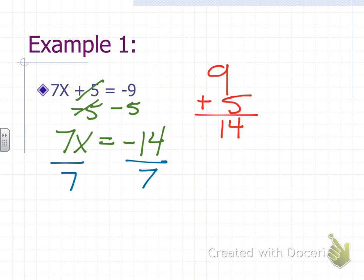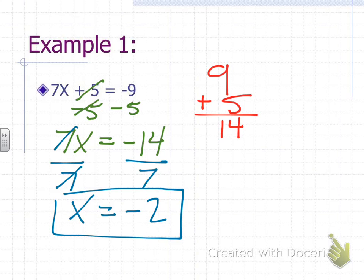On the left, 7 divided by 7 is 1, so all I have to write is x. And I have negative 14 divided by 7. And when we're dealing with negatives, when we're dividing or multiplying, a negative divided by a positive is a negative answer. And then 14 divided by 7 is 2. So my final answer for this problem is x equals negative 2.